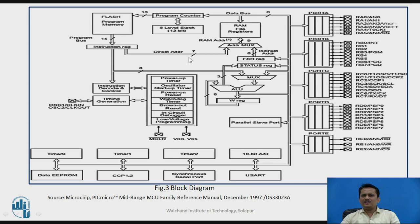In immediate addressing, the operand is embedded in the opcode. In direct addressing, a 7-bit address is in the instruction, with the remaining two bits from the Status register, pointing to a data memory location. In indirect addressing, the FSR register and INDF register are used. The ALU result can be stored back in the working register or directly into a file register.